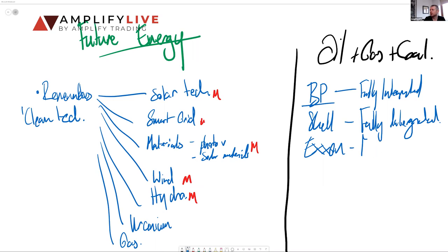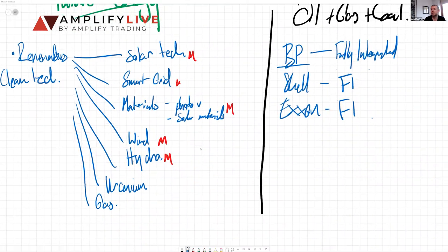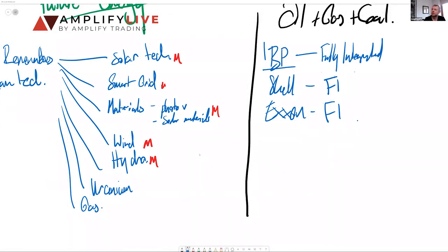That means that BP, they do the exploration and production, they find it, drill it, ship it to shore, they refine it and they retail it. That's called fully vertically integrated as an oil company. To a certain degree, Exxon is fully integrated as well.